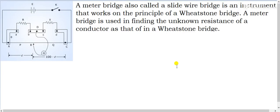The next topic after Wheatstone bridge is the meter bridge. The meter bridge is the practical form of the Wheatstone bridge — the Wheatstone bridge is theoretical, but the meter bridge is its practical form. It works on the same principle: when no current flows through the galvanometer, the bridge is balanced, meaning P/Q = R/S. The main application of the meter bridge is to find the unknown resistance of a conductor.